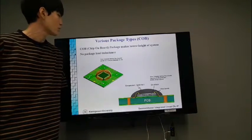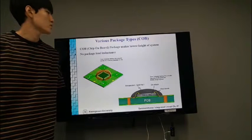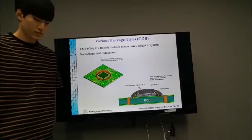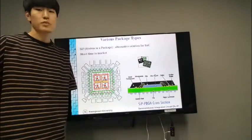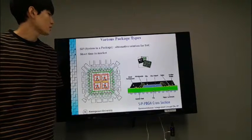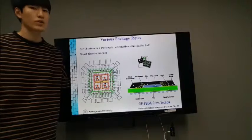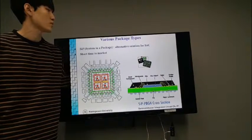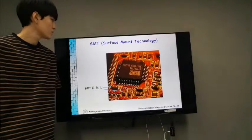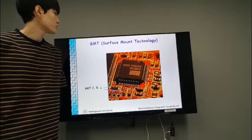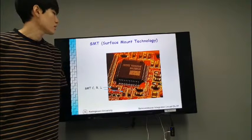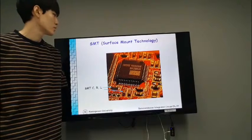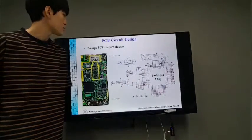The COB means chip on board, meaning that the chip is attached to not package but circuit board. This package is used for making the lowest type of system. The SIP means system in a package, meaning that the passive elements are combined to the single package together. This package is an alternative solution for SOC. SOC means the system on chip. The SMT means surface mount technology. This package doesn't require the holes, so this package is just attached to the surface of circuit board.